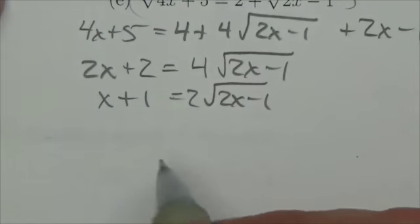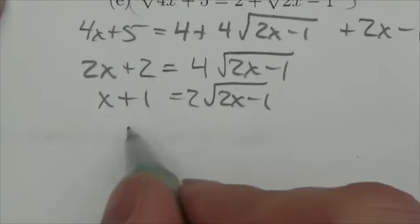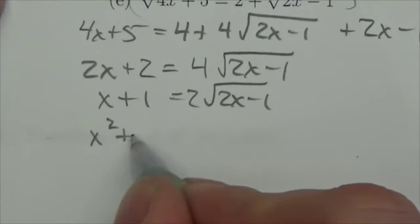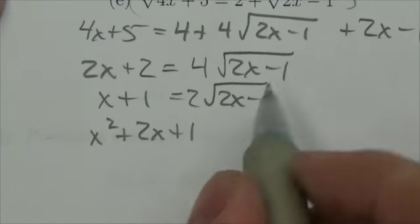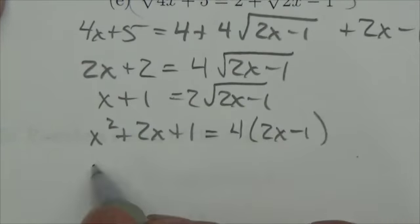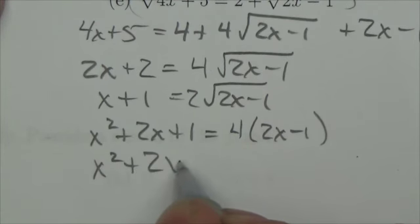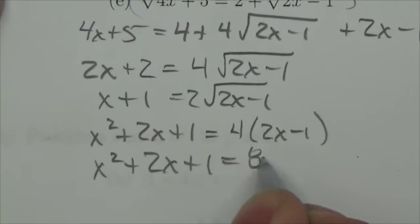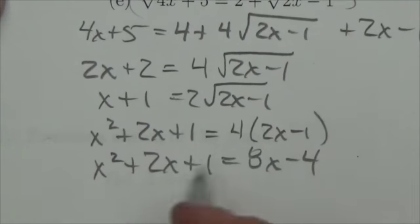I could divide by this 2 here, but then I'm gonna get a fraction. I'm just gonna jump right into squaring, so x squared plus 2x plus 1 is equal to 4 times 2x minus 1. So x squared plus 2x plus 1 is equal to 8x minus 4, and bring those terms over.